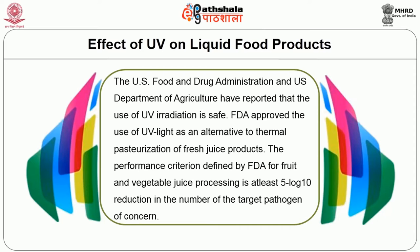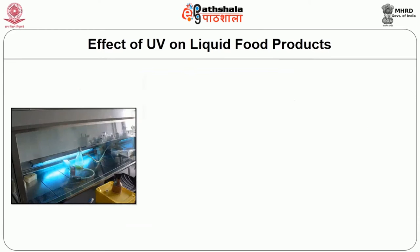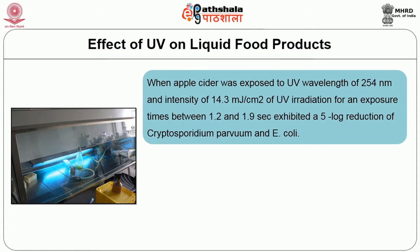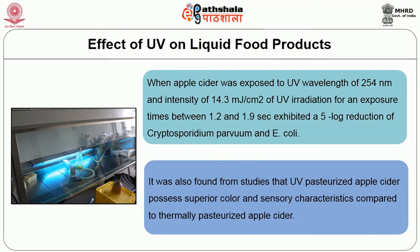The US Food and Drug Administration and US Department of Agriculture have reported that the use of UV irradiation is safe. FDA approved the use of UV light as an alternative to thermal pasteurization of fresh juice products. The performance criteria defined by FDA for fruit and vegetable juice processing is at least five log reduction in the number of the target pathogen of concern. When apple cider was exposed to UV wavelength of 254 nanometers at an intensity of 14.3 millijoules per centimeter square for an exposure time between 1.2 and 1.9 seconds, it exhibited a 5 log reduction of Cryptosporidium and E. coli. UV-pasteurized apple cider also possessed superior color and sensory characteristics compared to thermally pasteurized apple cider.